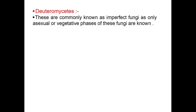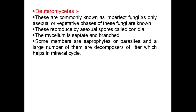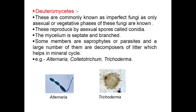Deuteromycetes are commonly known as imperfect fungi, as only the asexual or vegetative phase of these fungi is known. They reproduce by asexual spores called conidia. The mycelium is septate and branched. Some members are saprophytes or parasites, and a large number are decomposers of litter which helps in mineral cycling. Examples include Alternaria, Colletotrichum, and Trichoderma. You can watch these in the diagrams.